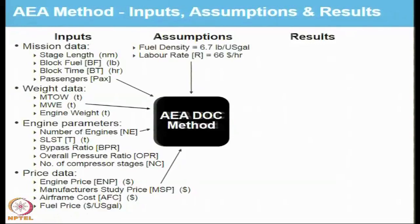The assumptions are regarding the density of fuel, which is typically taken as 6.7 pounds per US gallon, and the labour rate, which is 66 dollars per hour. These numbers may differ from country to country, but for uniformity we assume these values. So when the operating cost as per the AEA method is quoted, everybody knows these are the assumptions which have been considered while arriving at those particular values.